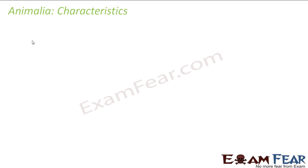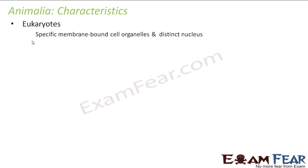Let us first talk about the basic characteristics of this kingdom. There are certain features which are common to all organisms belonging to Kingdom Animalia. The first characteristic is that they are eukaryotes — every animal cell will have all the different cell organelles with distinct membranes around each of them, and they also have a distinct nucleus.